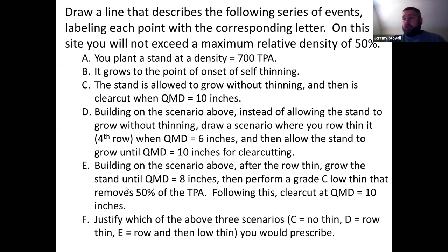We'll continue to build on that with scenario E. Scenario E, you do the same fourth row thin at a QMD of six, and then you grow it until QMD is eight. You perform a grade C low thin that removes 50% of the trees per acre, and you need to know what the impact of a low thin is on the quadratic mean diameter of your stand. You should have already done that for the Gingrich style stocking guide.